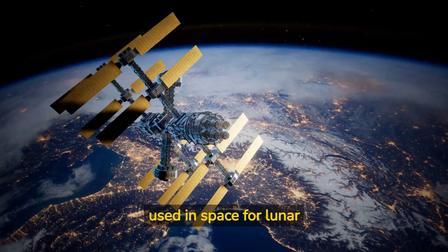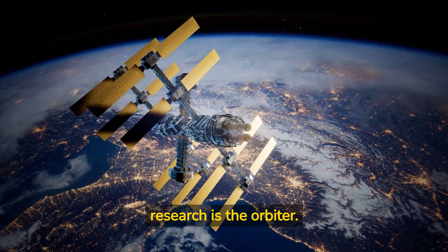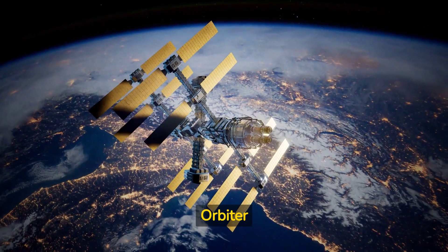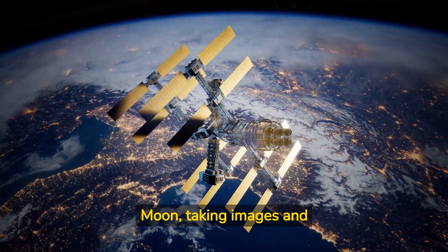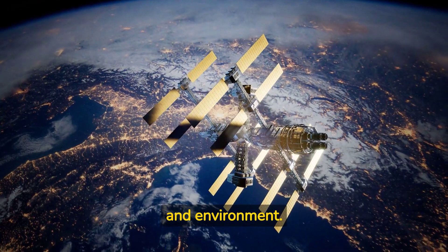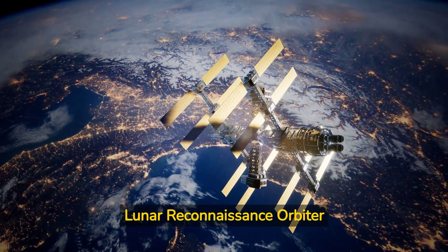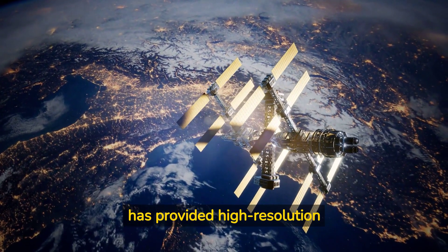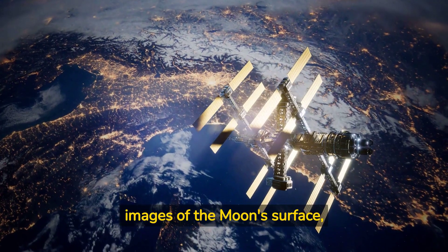Another key technology used in space for lunar research is the orbiter. Orbiter spacecraft are designed to orbit the moon, taking images and measurements of the moon's surface and environment. For example, the Lunar Reconnaissance Orbiter has provided high-resolution images of the moon's surface.